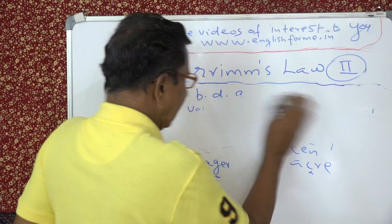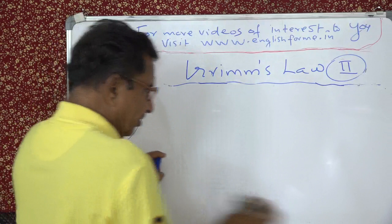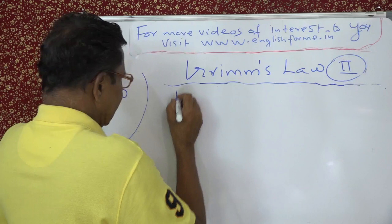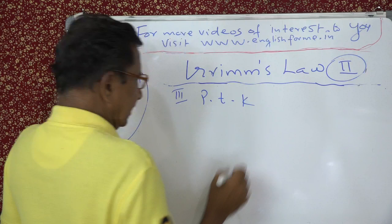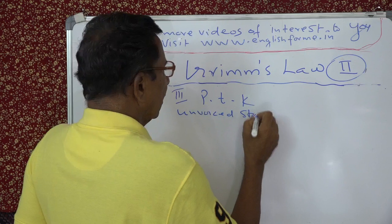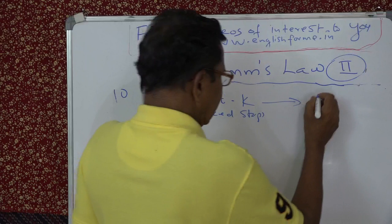The third and last correspondence for us: P, T, K of Indo-European — these are voiceless stops. What happened to them? They became F, Th, and H. This is represented as X or H in books. Voiceless stops became voiceless fricatives.